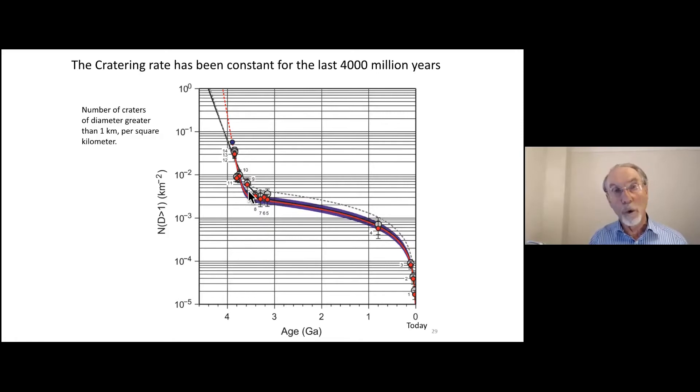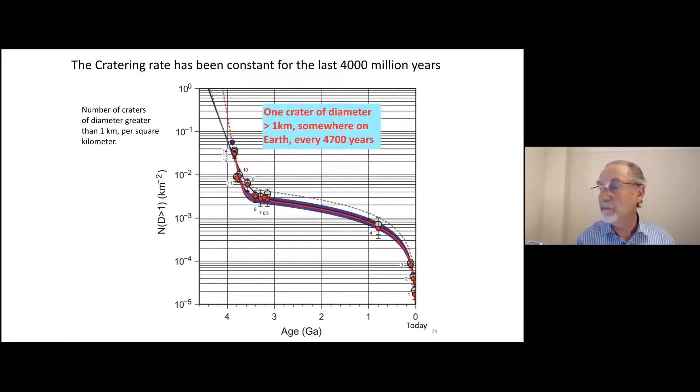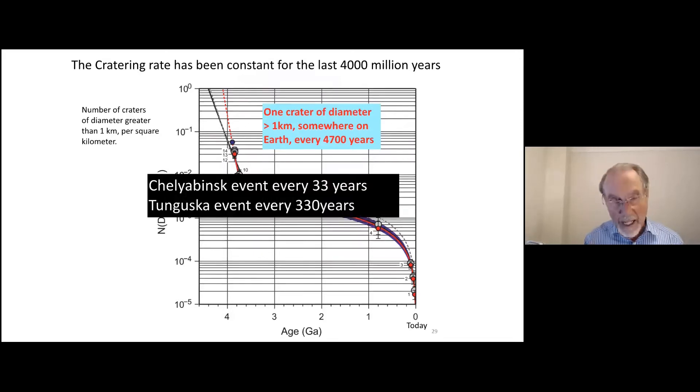Now the age calibration, this is all based on rock samples brought back from the Moon by the astronauts that could be dated. And so we could relate various cratering terrains to time to get the cratering rate. And translated to the Earth, this corresponds, this rate is an equivalent to one impact somewhere on Earth, creating a crater of more than a kilometer in diameter every 4700 years or so. And from this data and the distribution of craters, we could work out that a Chelyabinsk event, on average, would occur about every 33 years, and a Tunguska event, perhaps every 330 years.